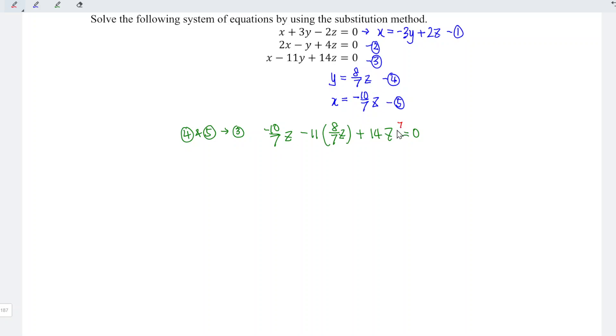I'm going to times 7 over 7 to the third term. So we should have minus 10 minus 11 times 8 which is 88, and we plus 14 times 7 which is equal to 98, divided by 7z is equal to 0. Let's compute the value.